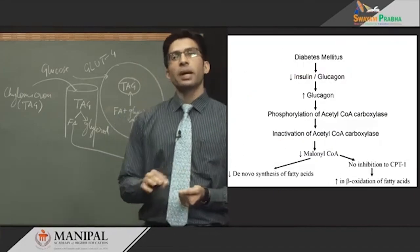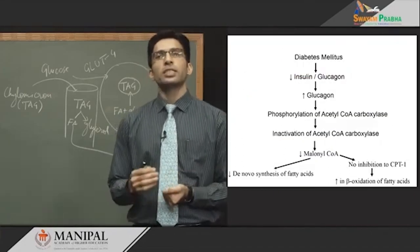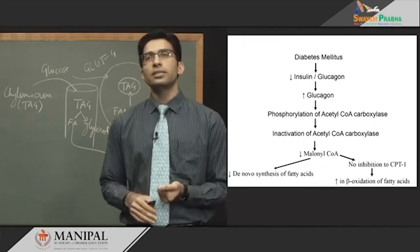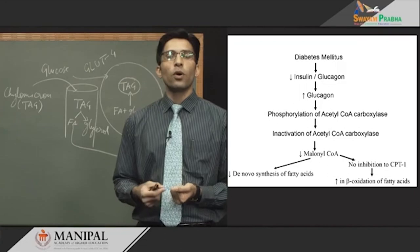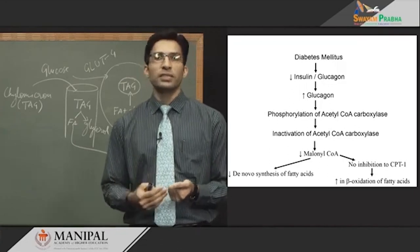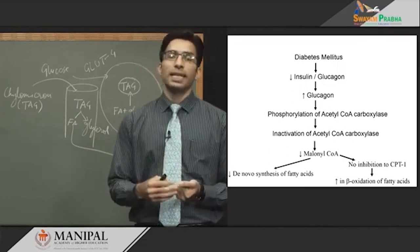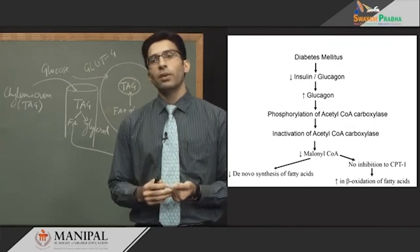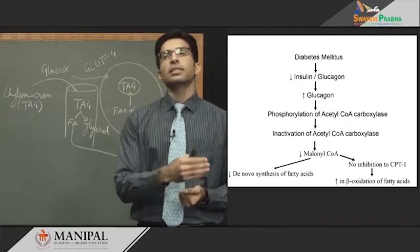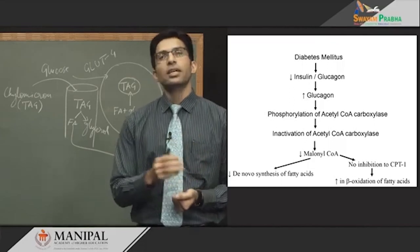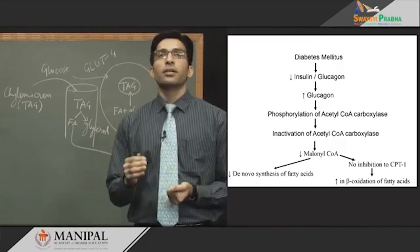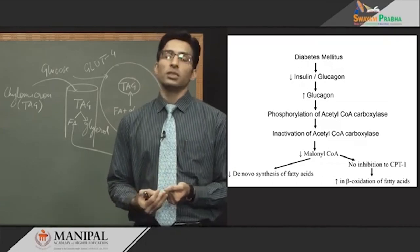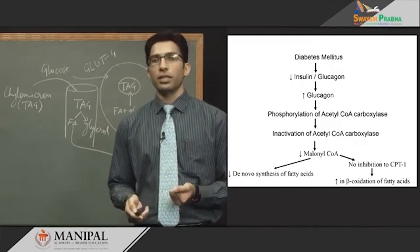This schematic flowchart shows how in diabetes, the decreased insulin-to-glucagon ratio causes increased glucagon, which phosphorylates and inactivates acetyl-CoA carboxylase, decreasing malonyl-CoA levels. This decreases de novo synthesis of fatty acid, lifts the inhibition on CPT1, and increases beta-oxidation of fatty acid in diabetes mellitus.